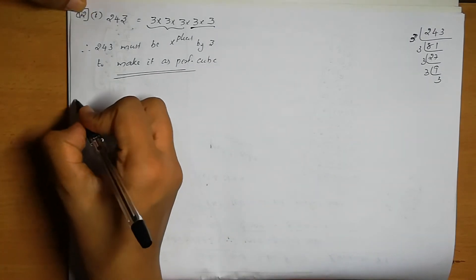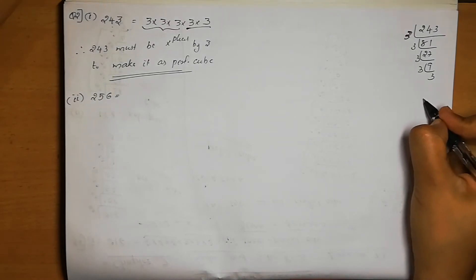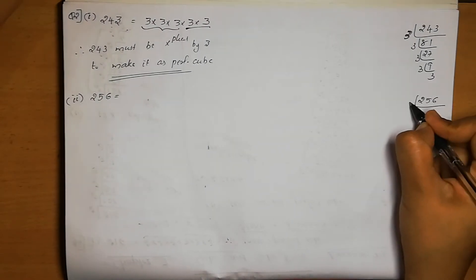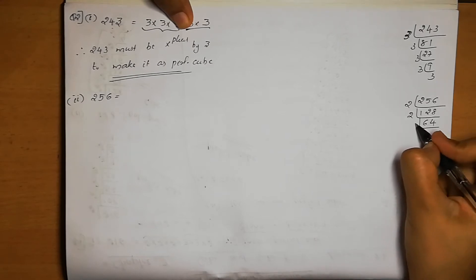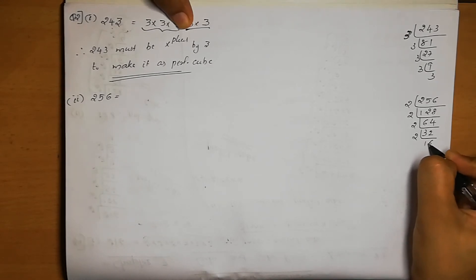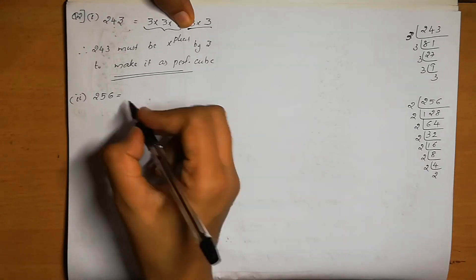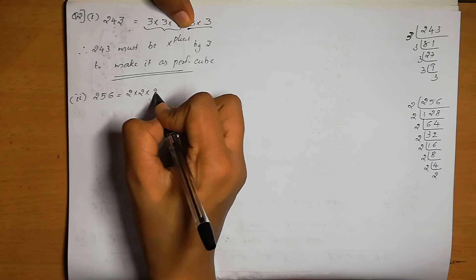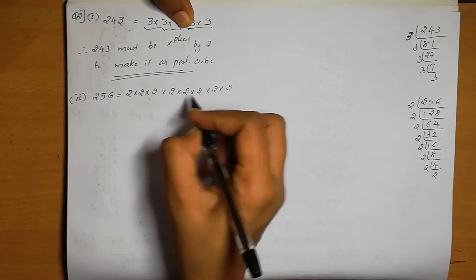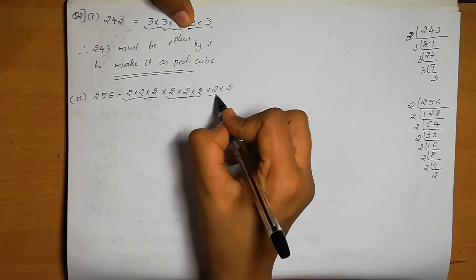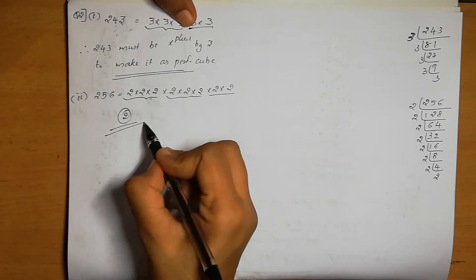Second number is 256. Taking its prime factors: 2 × 2 × 2 × 2 × 2 × 2 × 2 × 2. We have two triplets of 2s, but one 2 is missing from a third triplet. Therefore, 256 must be multiplied by 2 to make it a perfect cube.